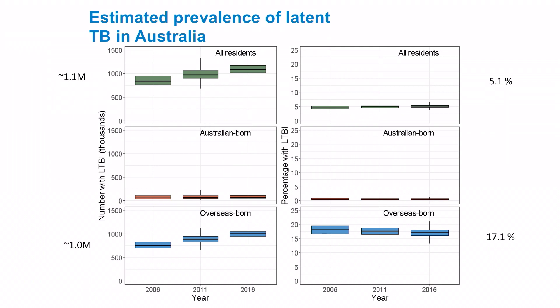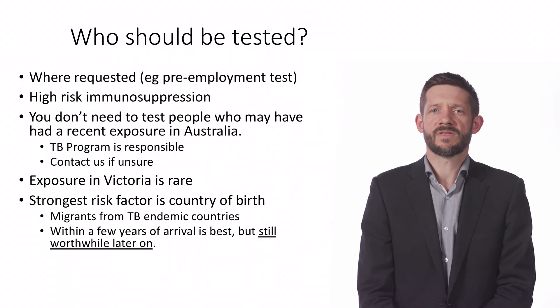Bringing this all together with data from the Australian National Census, we estimate that there are now more than 1.1 million people with latent TB living here, which is just over 5% of the total population. Over 90% were born overseas, which means that over 17% of all overseas-born Australians have latent TB infection.